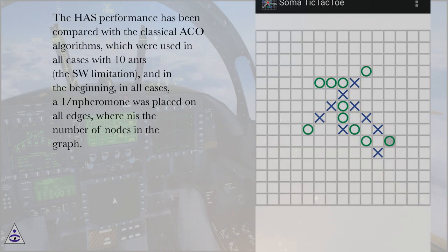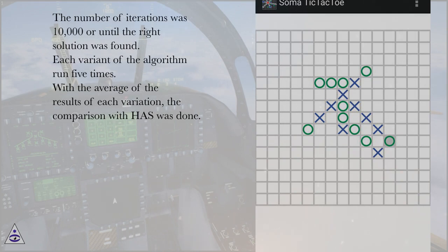The HAS performance has been compared with the classical ACO algorithms, which were used in all cases with ten ants, the SW limitation, and in the beginning, in all cases, a 1/n pheromone was placed on all edges, where n is the number of nodes in the graph. The number of iterations was 10,000 or until the right solution was found. Each variant of the algorithm ran five times. With the average of the results of each variation, the comparison with HAS was done.